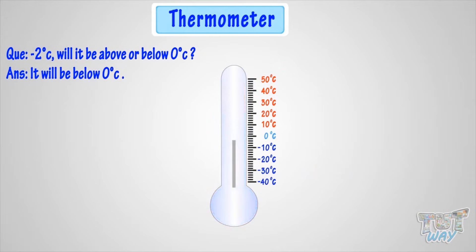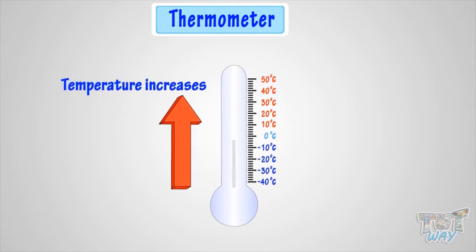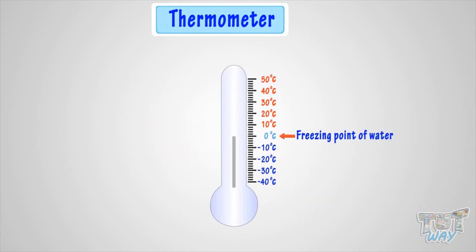So what have we learned? We have learned that the thermometer is used to measure temperature, and temperature increases as the silver line inside the thermometer rises, and temperature decreases as the same line comes down, and freezing point of water is zero degrees Celsius.